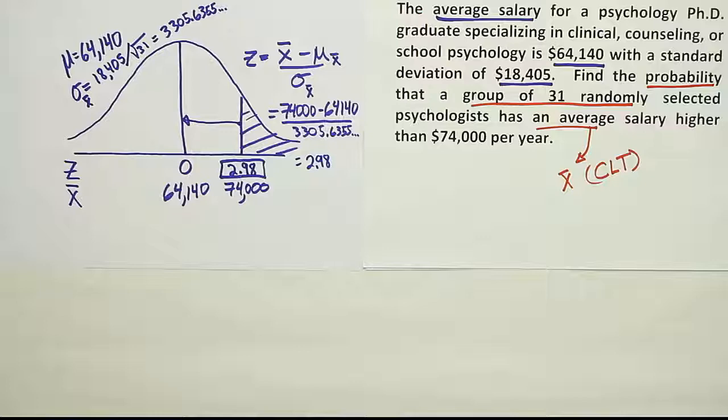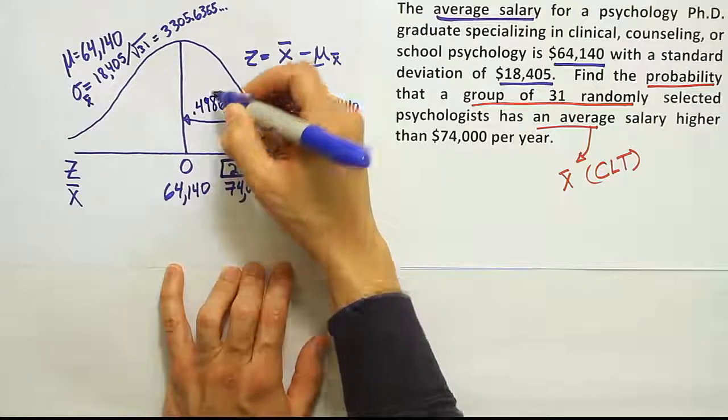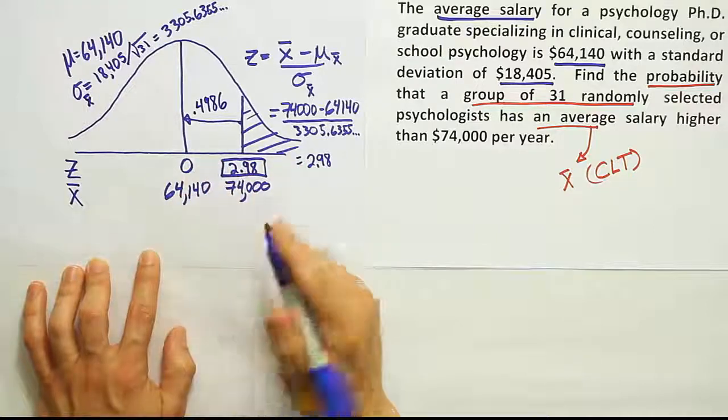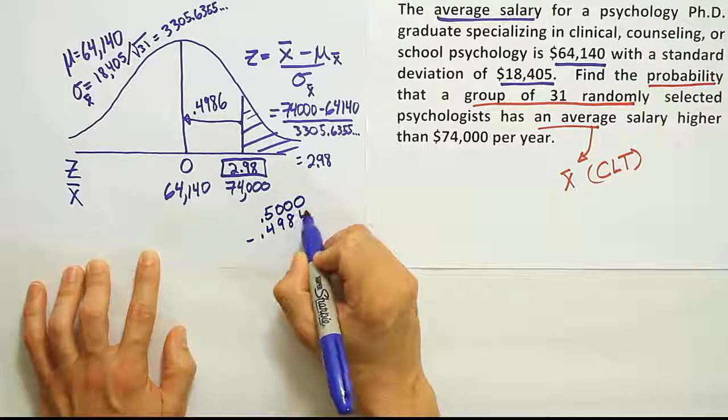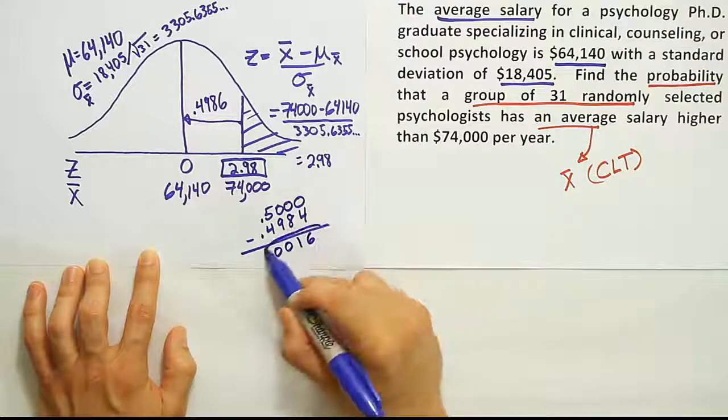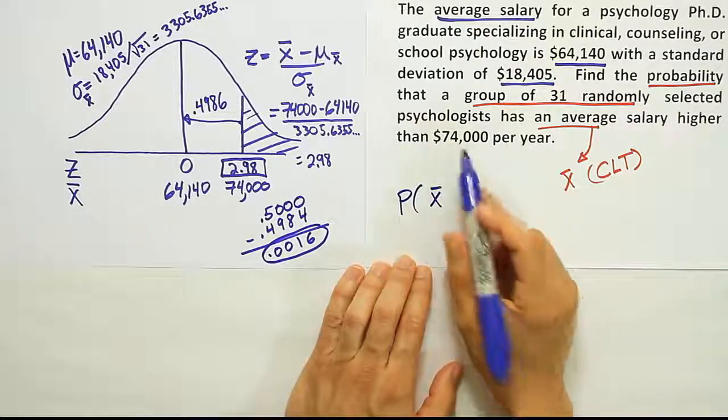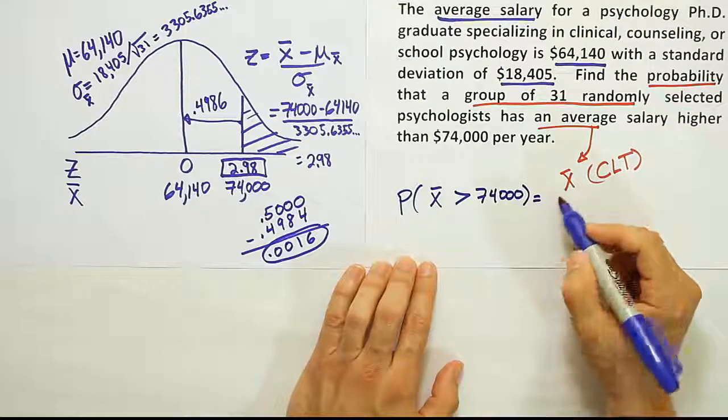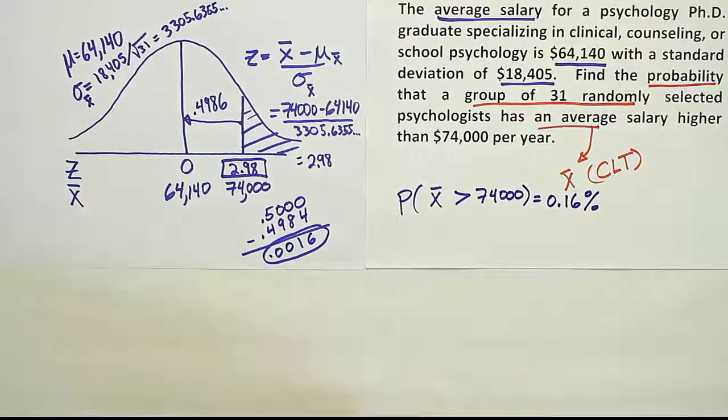Okay, so we looked up 2.98 and come up with a number 0.4986. That's the area in the white space. To get the area in the tail, remember, we have to do subtraction from 0.5 because half the curve is 50% of the area. So we do 0.500 minus 0.4986. And of course, that's going to give you 0.0014 after you do your arithmetic. Okay, so the probability that the average for this group of 31 randomly selected psychologists is higher than 74,000. That probability is a mere 0.16%. So a very small probability that you would end up with that kind of a result.